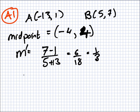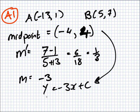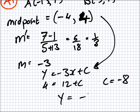So that's the slope of AB, but we need the perpendicular one, so that's minus 3. So using y equals mx plus c, I can substitute the midpoint. 4 equals minus 3 times minus 4 plus c, so 4 equals 12 plus c, so c equals minus 8. So our answer is y equals minus 3x minus 8.